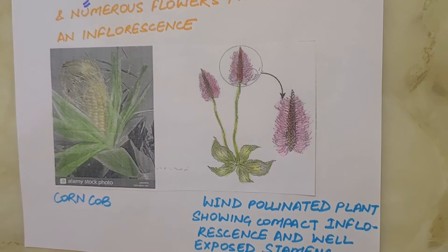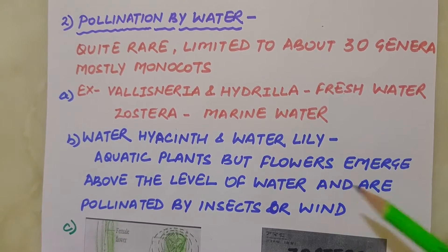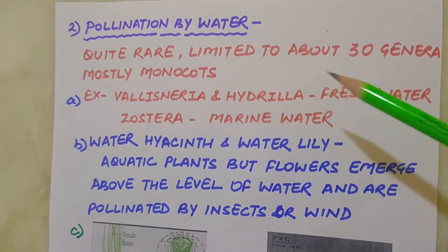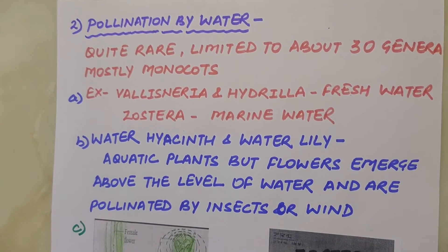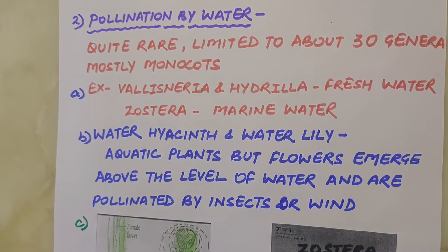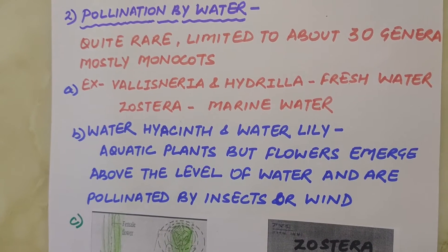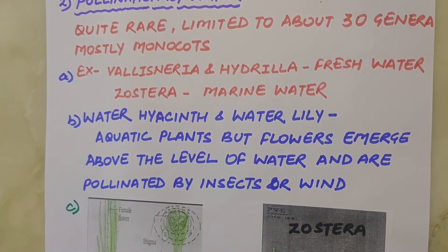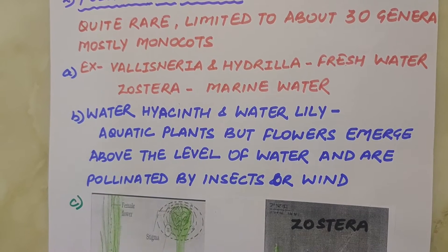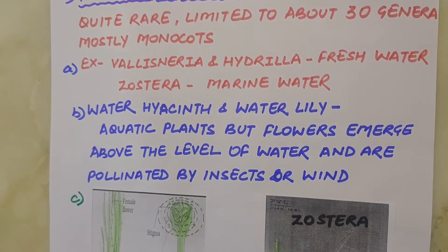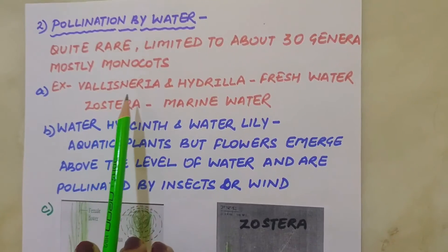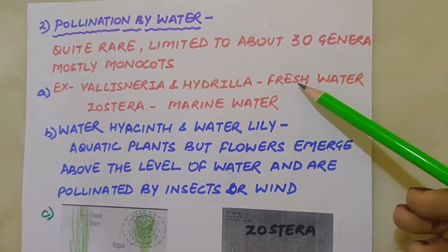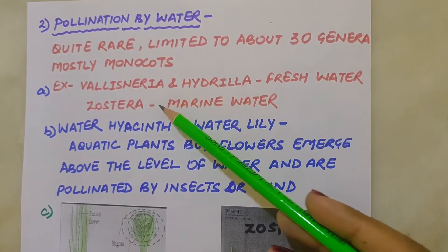The next pollination agency is water. Pollination by water is quite rare and limited to about 30 genera, mostly monocots. Water is a regular mode of transport for male gametes among lower plant groups such as algae, bryophytes and pteridophytes. It is believed that the distribution of some bryophytes and pteridophytes is limited because of the need of water for transport of male gametes and fertilization. Some examples of water-pollinated plants are Vallisneria and Hydrilla, which grow in fresh water, and several marine sea grasses such as Zostera.